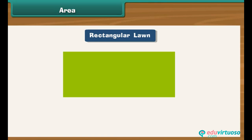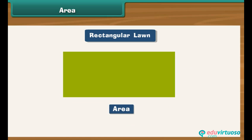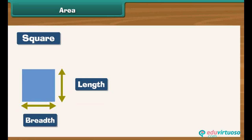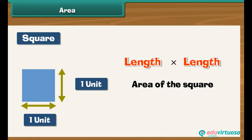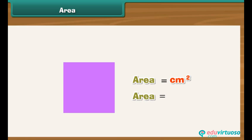The rectangular front lawn of Shreya's house is a two-dimensional figure with a length and a breadth. The total surface covered by a two-dimensional figure is known as its area. A square is a two-dimensional figure whose length is equal to its breadth. Consider a square of length one unit. The area of a square is length into length. Therefore, the area of a square with length one unit is one into one, which equals one unit square. Just as there is a unit of measurement of length, there is a unit of measurement of area as well. We measure lengths in centimeters or meters; similarly, we measure areas in centimeter square or meter square.